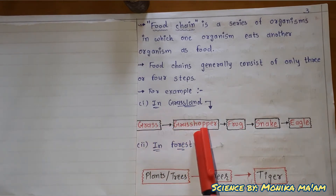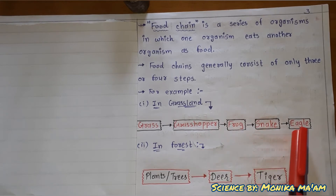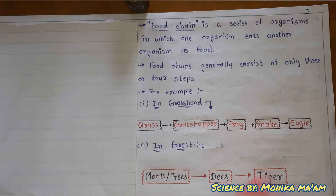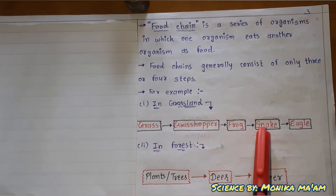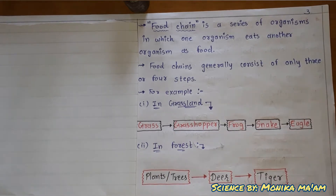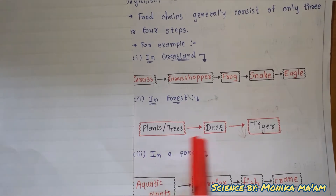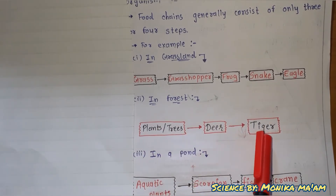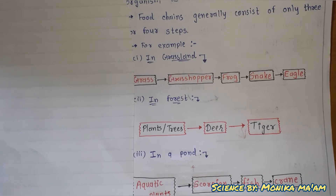For example, in a grassland food chain: grass is eaten by a grasshopper, grasshopper is eaten by a frog, frog is eaten by a snake, and snake is eaten by an eagle. Another example: plants or trees are eaten by deer, and deer are eaten by tiger. Who eats plants? Deer. Who eats deer? Tiger. This is the food chain.